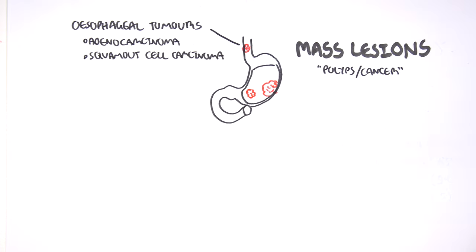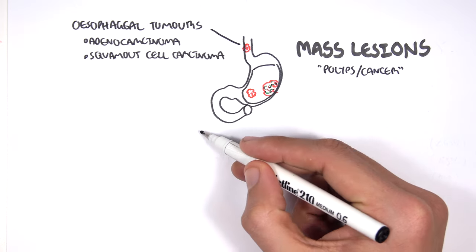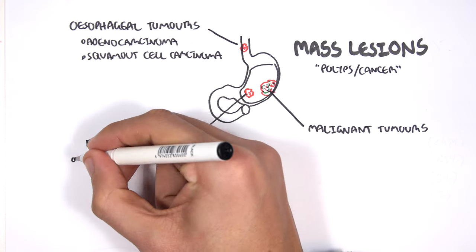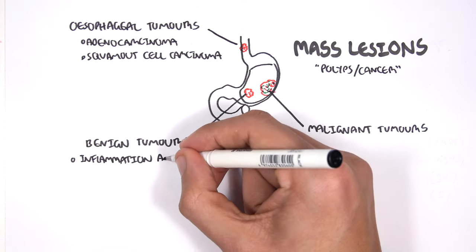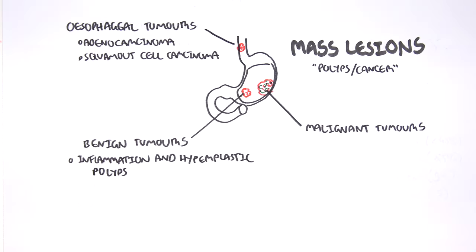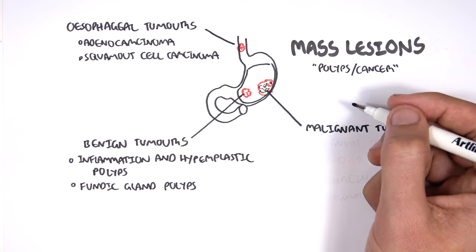We can also have growths within the stomach. They can be benign tumors or malignant tumors. For benign tumors, we can have a few types: inflammation and hyperplastic polyps, fundic gland polyps, and gastric adenomas.